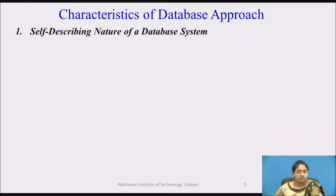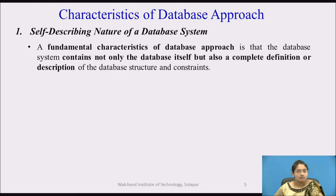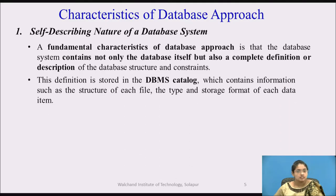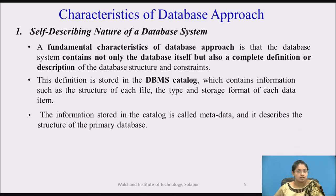First is the self-describing nature of a database system. A fundamental characteristic of the database approach is that the database system contains not only the database itself but a complete definition and description of the database structure and constraints. This definition is stored in the database catalog, which contains information such as the structure of files and the type and storage format of each data item. The information stored in the catalog is called metadata, and it describes the structure of the primary database. So metadata is nothing but data about data.